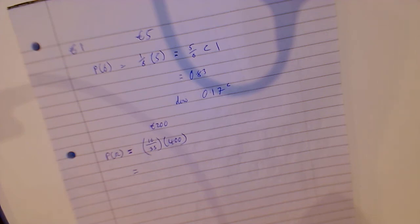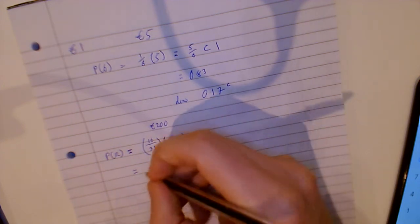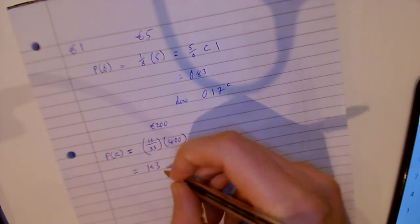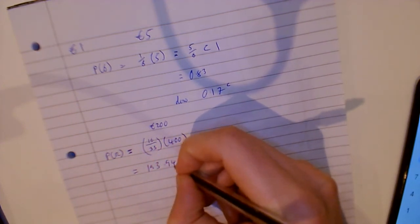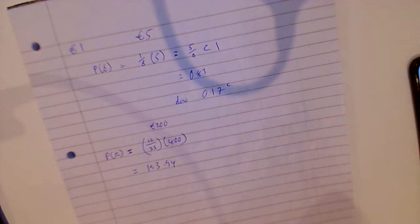You got 16 divided by 33 equals, multiplied by 400, and that's 193 euro 0.94. So we are losing six euro and six cents.